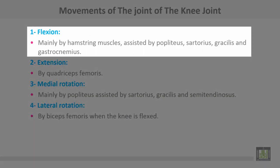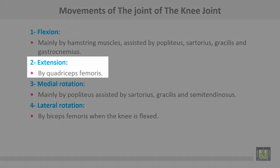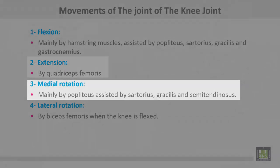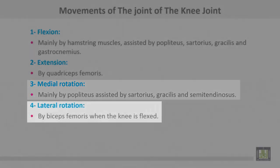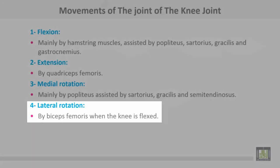The movements of the knee joint: flexion is mainly by the hamstring muscles, assisted by popliteus, sartorius, gracilis, and gastrocnemius. Extension is by quadriceps femoris. Medial rotation is mainly by popliteus, assisted by sartorius, gracilis, and semitendinosus. Lateral rotation is by biceps femoris when the knee is flexed.